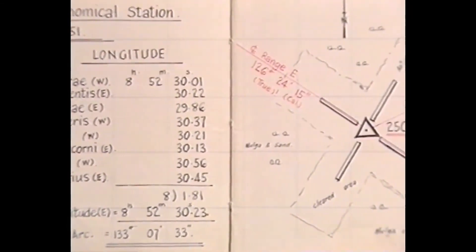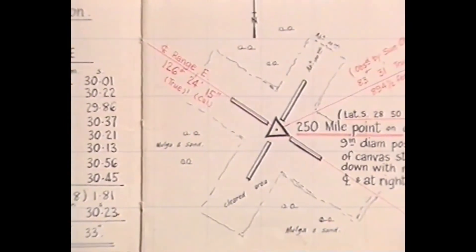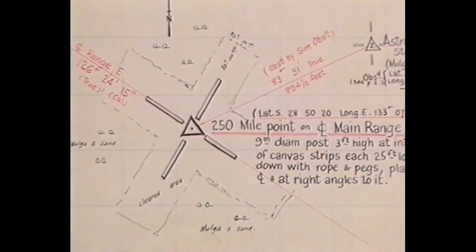These calculations are the actual field notes made by Lynn when he surveyed the position of the 250-mile point.